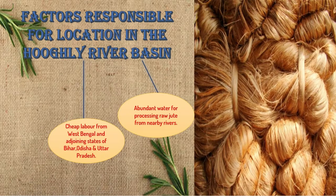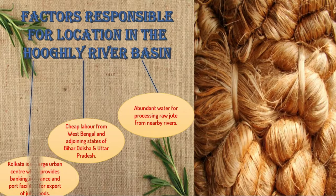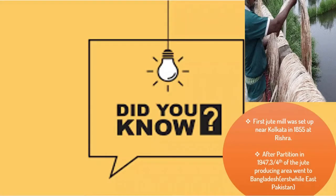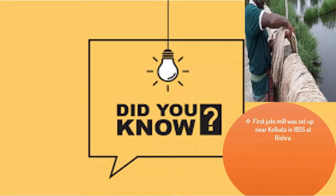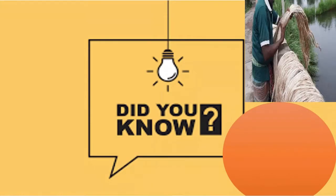The next factor is the availability of cheap labor from West Bengal and the adjoining states of Bihar, Odisha, and Uttar Pradesh. The next factor is Kolkata, which as an urban center provides banking, insurance, and port facilities for the export of jute goods.